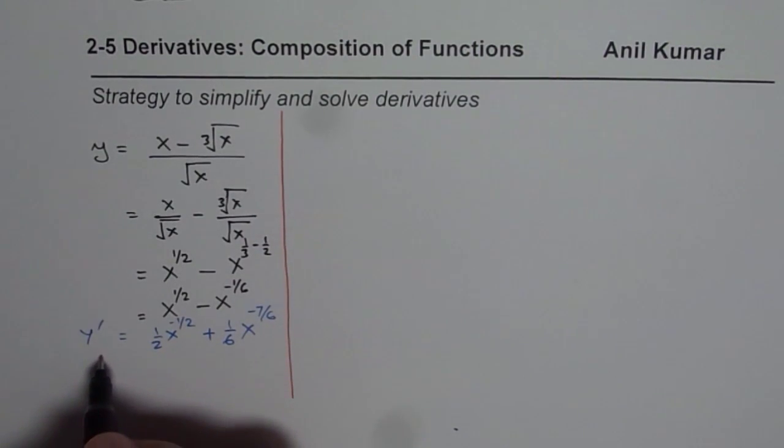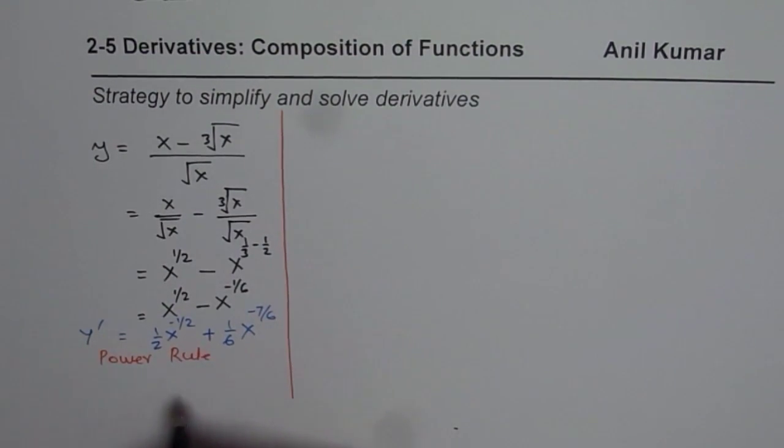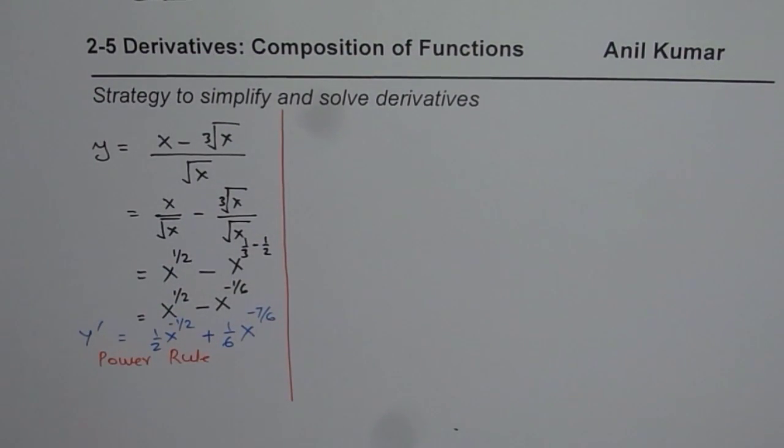So it is easier to find the solution if you can convert your radicals into powers and then apply power rule. So in this strategy, it is power rule which can be applied. Power rule is a simpler rule to apply than quotient rule.